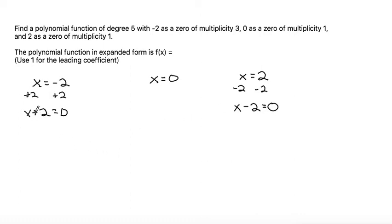So now once we have all of our factors, we can multiply them all together based on the multiplicity. The negative 2 had a multiplicity of 3, so in our function we're going to have x plus 2 is a factor 3 different times: x plus 2, x plus 2, and x plus 2. For our x equals 0, that gives us a factor of just x, I'll put that out front. And then we also have a factor of x minus 2.